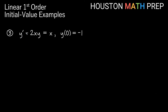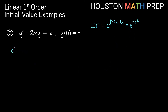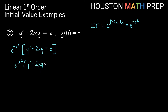Looking at our last example: y prime minus 2xy equals x, and our condition is y of 0 equals negative 1. This is already in normal form, so we go straight to finding our integrating factor. Our integrating factor is e to the integral of negative 2x dx. The integral of negative 2x is negative x squared, so our integrating factor is e to the negative x squared. We multiply e to the negative x squared through the entire equation, distributing on the right side only since the left side is a product rule.